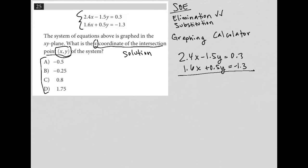So how can I do that? I can do that by multiplying the bottom equation by 3. So let's see what happens when I do that. So the top equation is still 2.4X minus 1.5Y equals 0.3. But the bottom equation is now 3 times 1.6, which is 4.8X. 3 times 0.5, which becomes positive 1.5Y. And 3 times negative 1.3, which becomes negative 3.9.